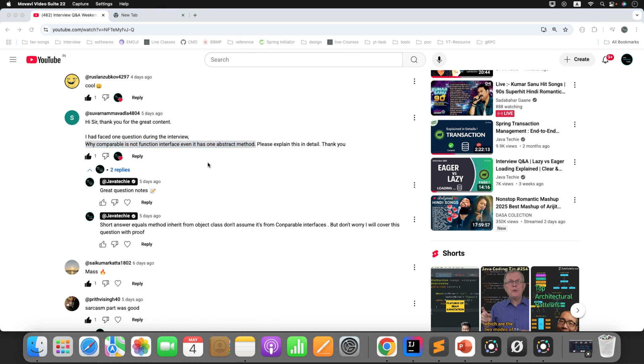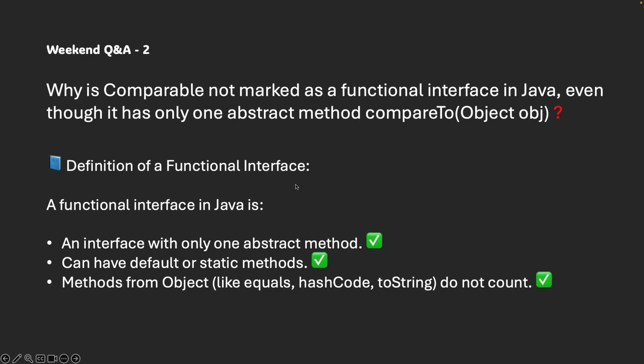Before we understand why Comparable is not a functional interface, let's first understand the definition of a functional interface. The first rule: an interface should have only one abstract method, and it can have any number of default or static methods. Any method from the Object class — like equals, hashCode, toString — does not count towards the functional interface constraints.